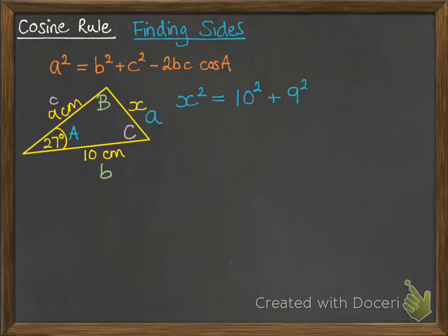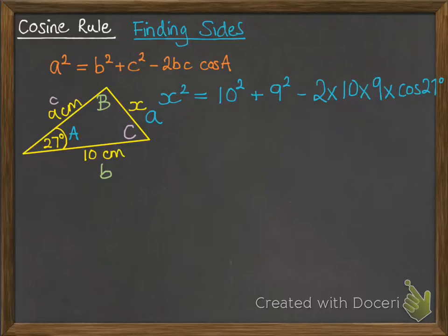c is 9 so get 9 squared minus 2 times 10 times, oops I missed a bit, hold on, there we go that's better, 2 times 10 times 9 because the 10 and the 9 are your b and c, multiplied by cos of angle a so that's cos 27°.